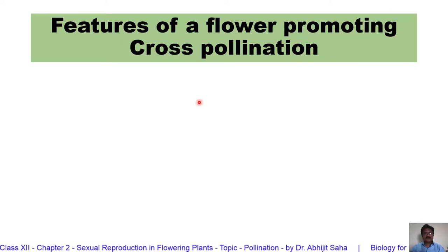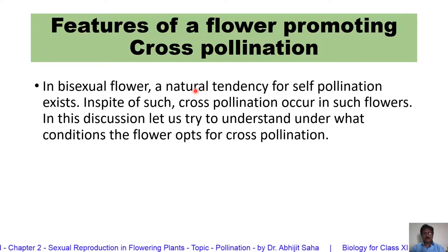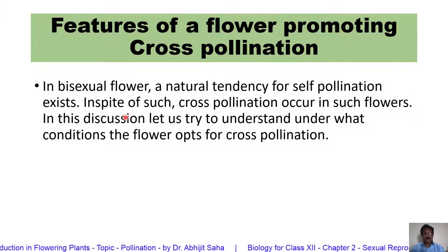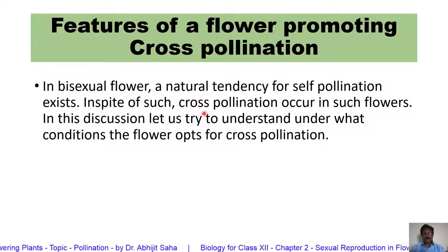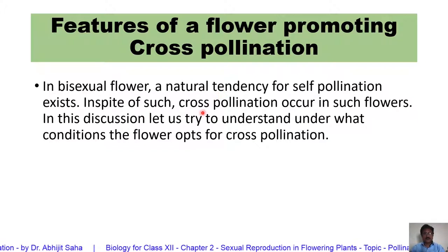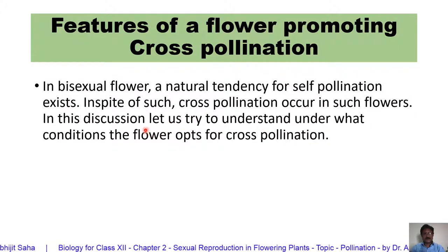Now let us study those features of a plant which promote cross-pollination. Bisexual flowers have a natural tendency for self-pollination, yet there are several bisexual flowers where cross-pollination occurs. Let us understand what makes such flowers opt for cross-pollination.